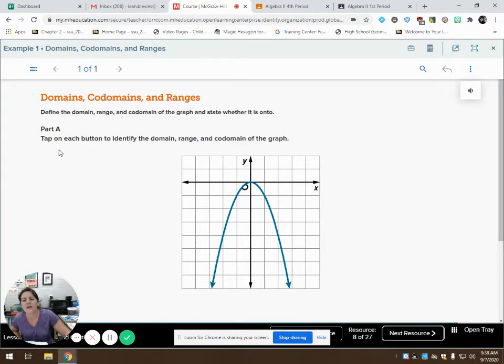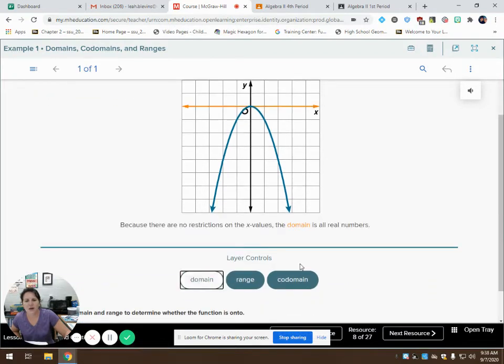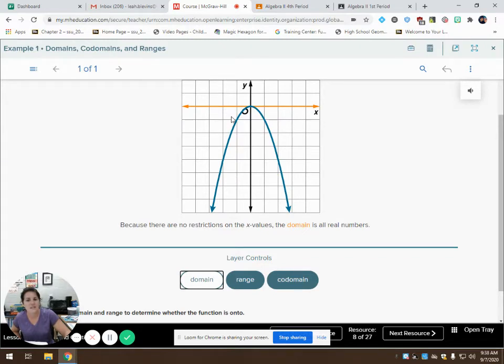So type on each button to identify the domain, it says. So our domain is our set of x values. So in this problem, in this given graph, my domain is going to be all x values because those arrows keep going down. And as it goes down, we can see that the graph is getting wider and wider and wider. It's spreading out further and further and further. So my domain is all of those x values.